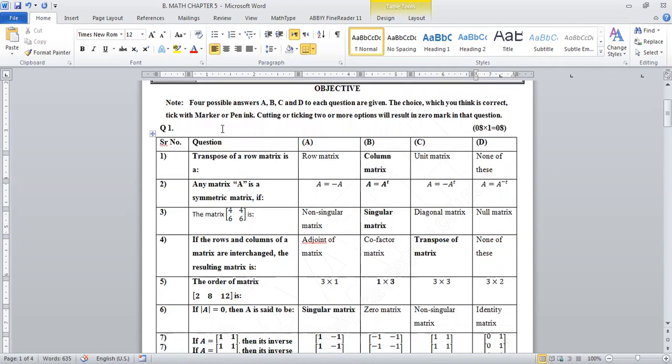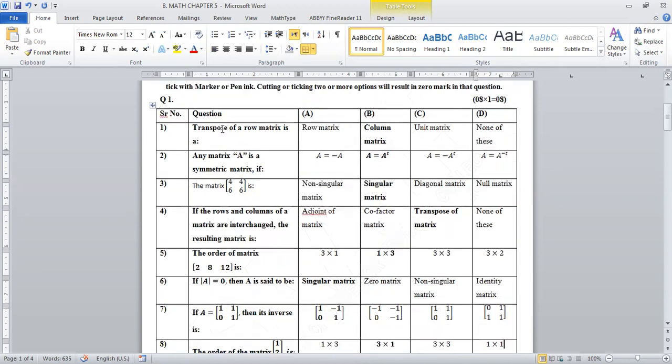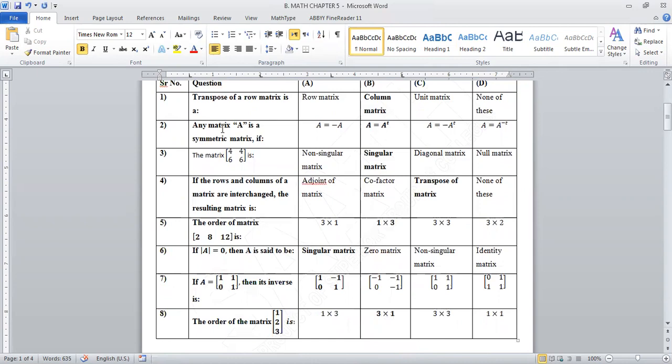If A is equal to [1 0; 1 1], then its inverse is [1 -1; 0 1]. The order of matrix [1; 2; 3] is three by one.